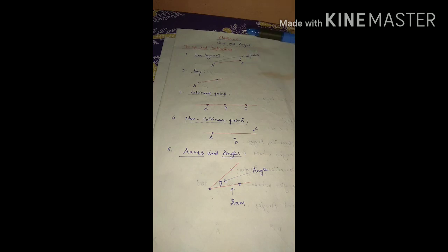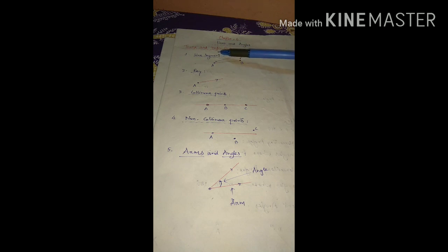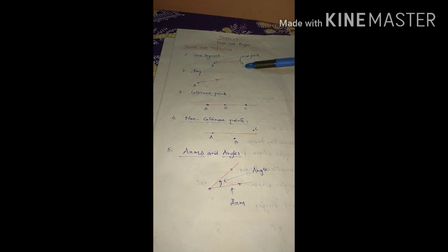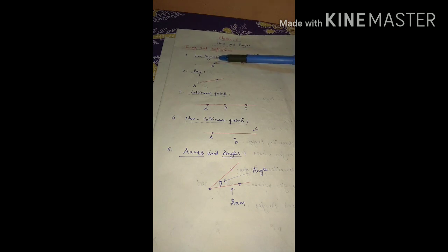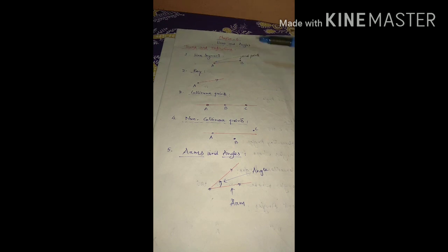Your task is: in your classwork copy, you have to write down each term with its definition and diagram. You must draw the diagram and write the definition as well. Here in the video only the diagram and the topic are shown — the definition is not written — so in your classwork copy you have to write down the definition also.